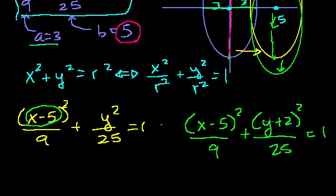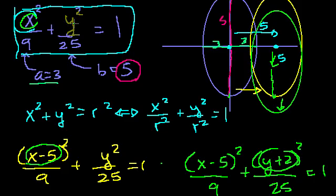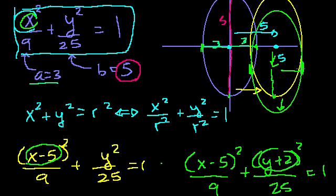The reason this works is that when y = −2, the term (y + 2)² equals 0, just like when y = 0 in the original. So when y = −2, the equation behaves the same way — you're at the same part of the ellipse curve as when y = 0 in the unshifted version.